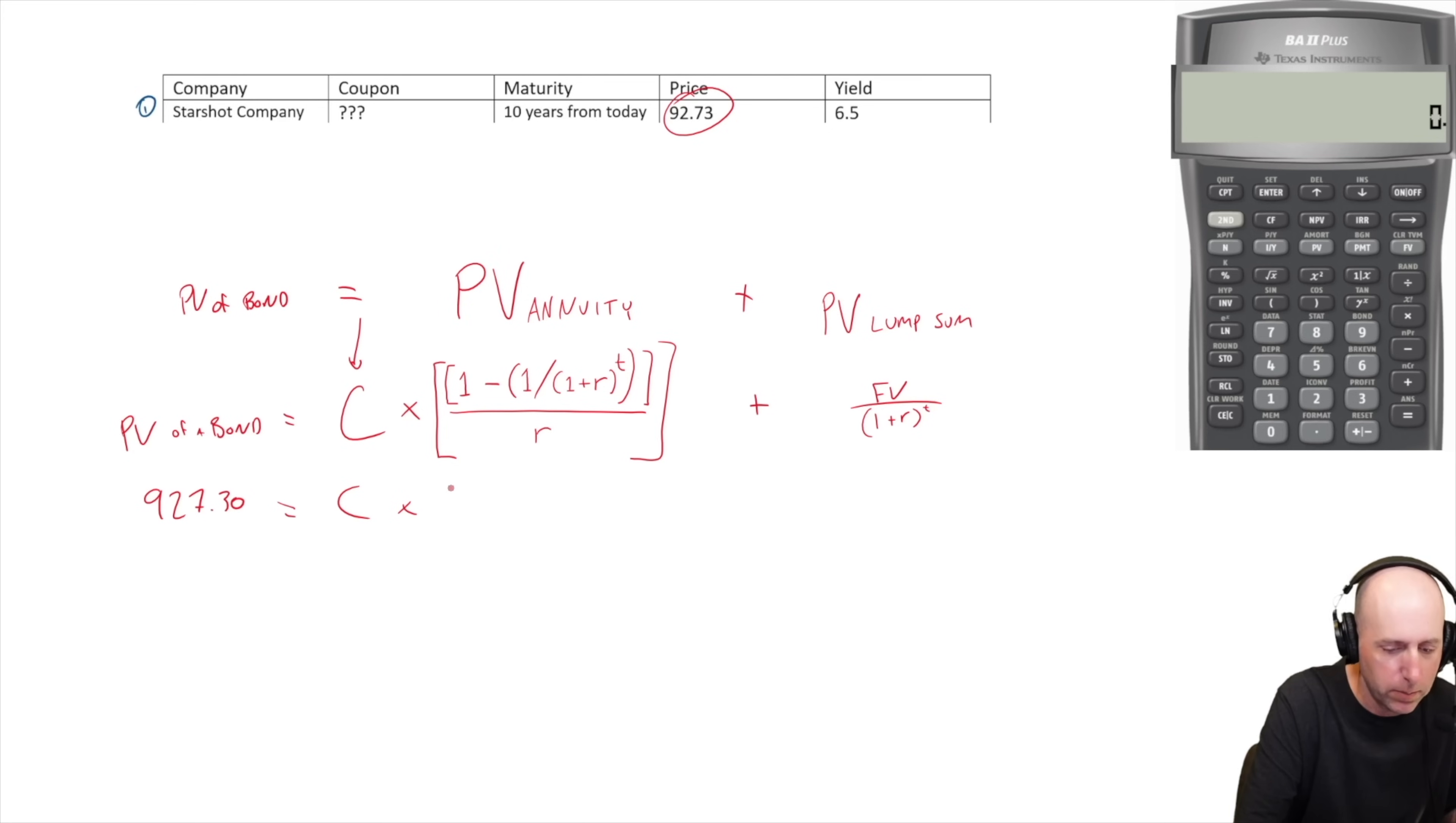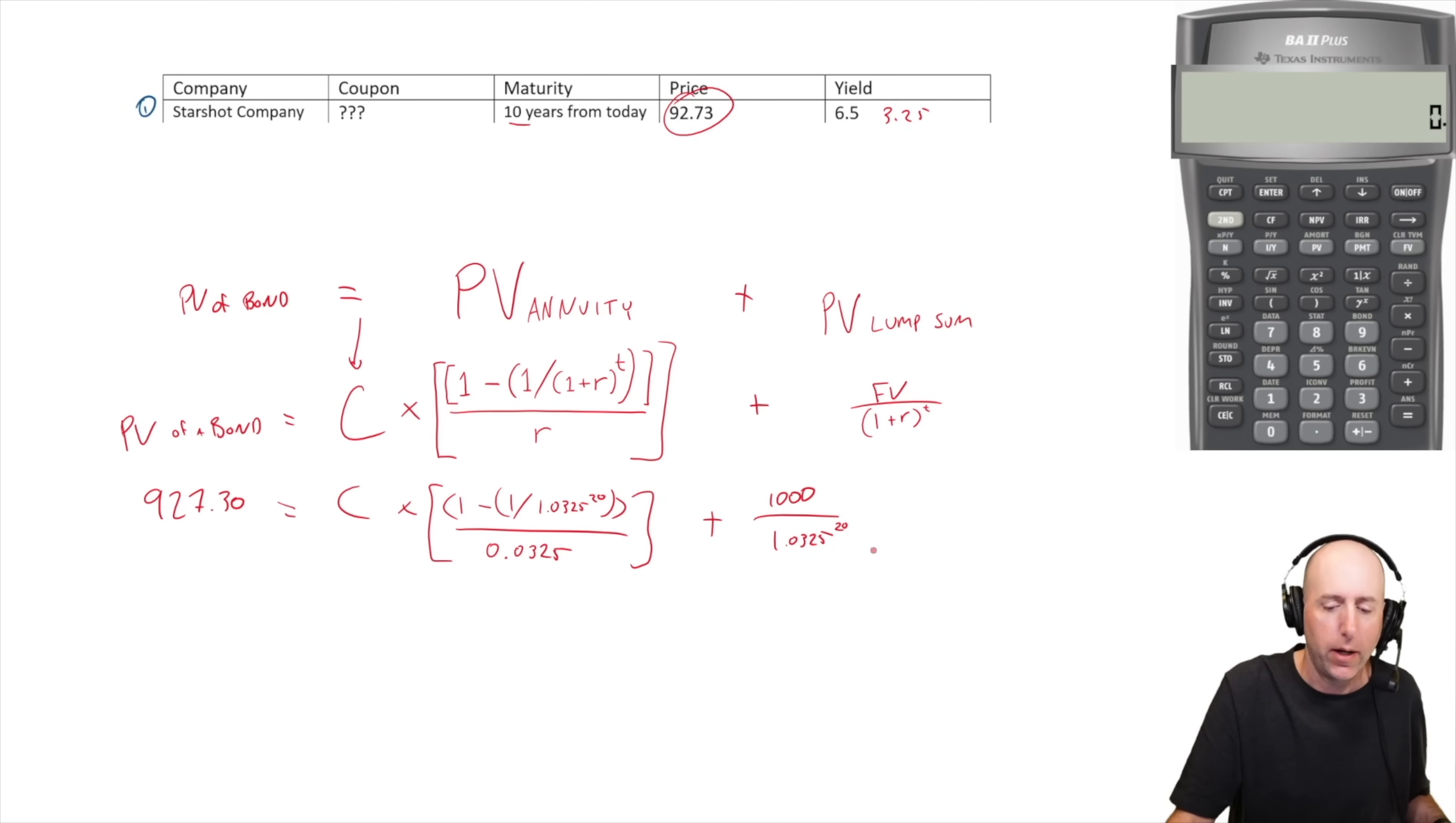The C is what we're solving for. We'll multiply that by this: one minus one over one plus r - so it's one plus our yield, but remember the yield is given annually, we need it divided by two, so it's 3.25%, so it's 1.0325 to the power of t, the number of periods, which is 20 semi-annual periods, to the power of 20, all divided by 0.0325. Add that to our FV, our future value of our bond, which is $1000 divided by 1.0325 to the power of 20.